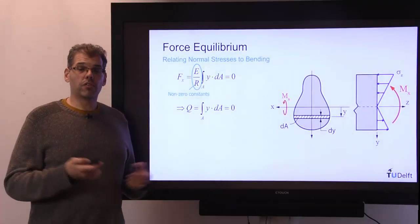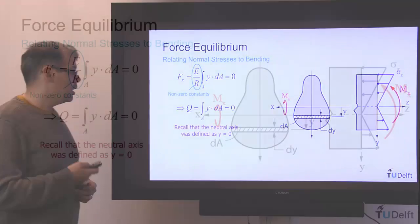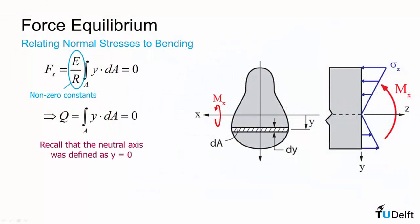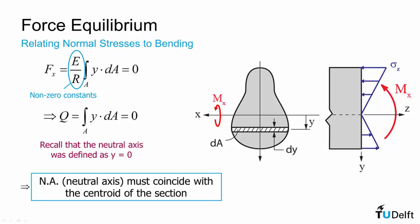Now what does it mean when our first moment of area is zero? That precisely means that our neutral axis that we are using for our datum has to pass through the centroid of the cross section. So the neutral axis passes through the centroid.